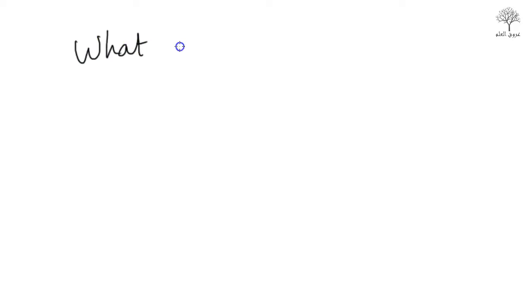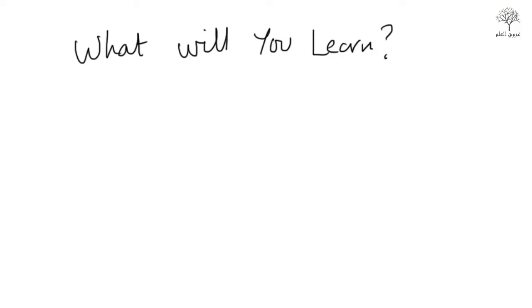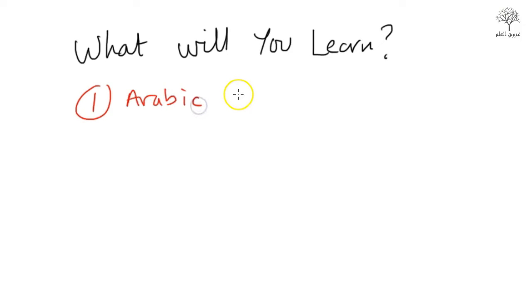After we've covered all of this, what do we learn by the end of the lessons? Number one — the first and foremost thing you're going to learn is how to understand Arabic grammar: the in-depth rules with their terminology. It's very, very important, especially if you're really keen on reading other types of books as well.